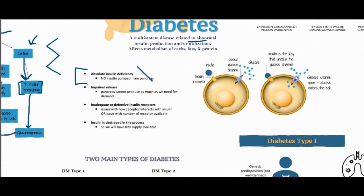Another way the system can be affected is you can have an impaired release of insulin, where the pancreas isn't producing as much insulin as we need for the demand. We have a little bit of insulin coming out, but we have so much glucose in our system that the body's not making enough insulin to take care of it. That can actually happen in type 1 or type 2.